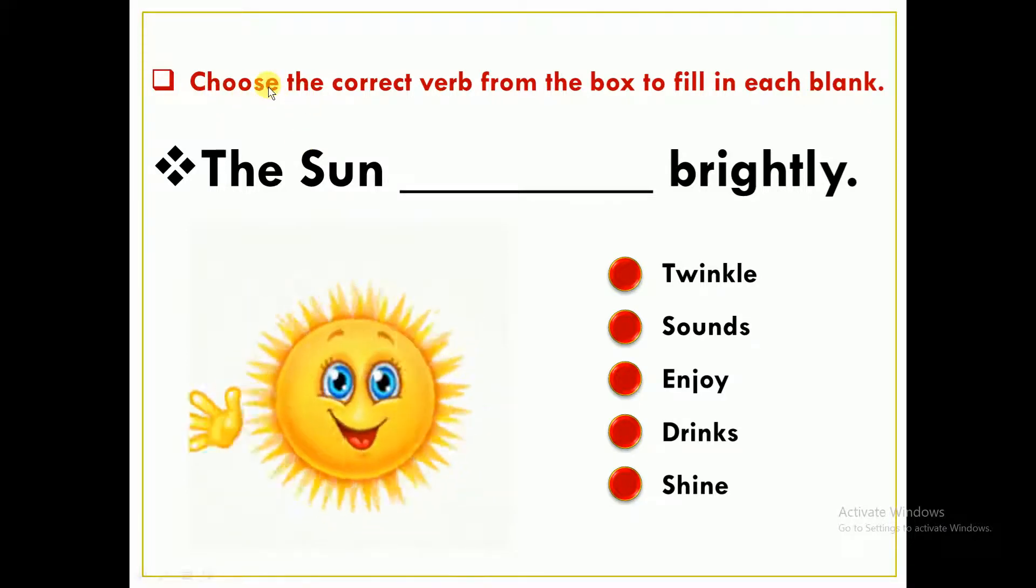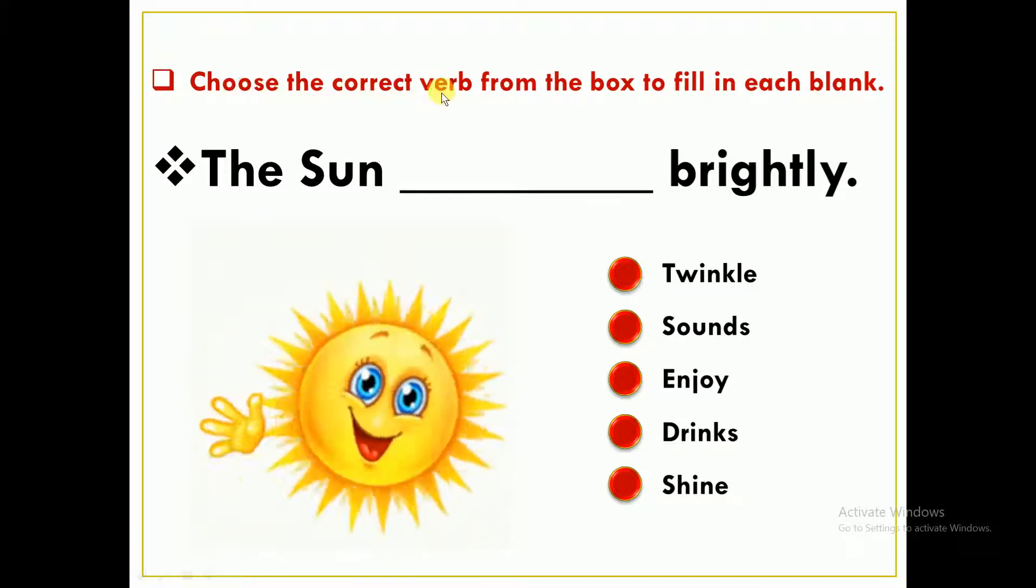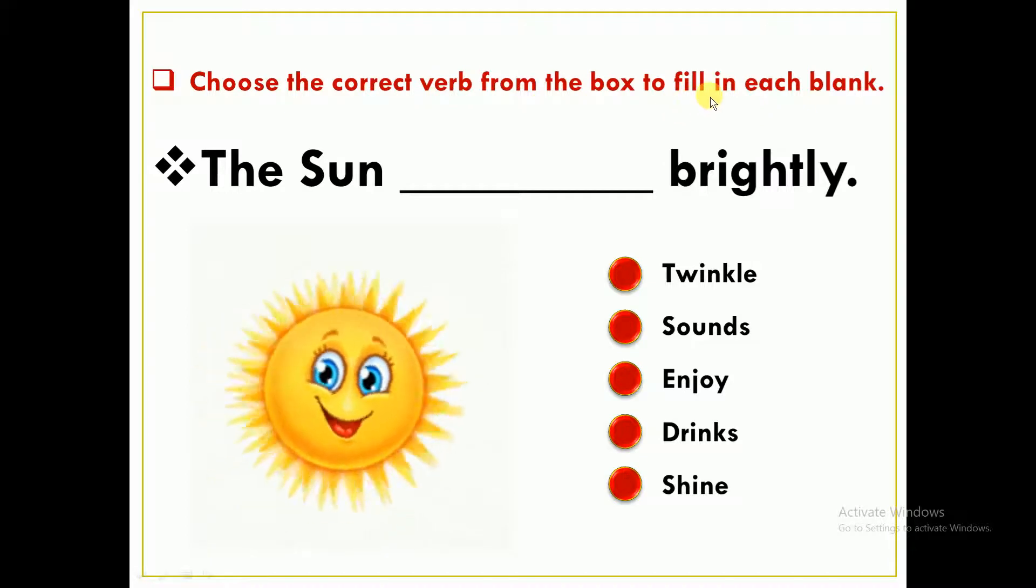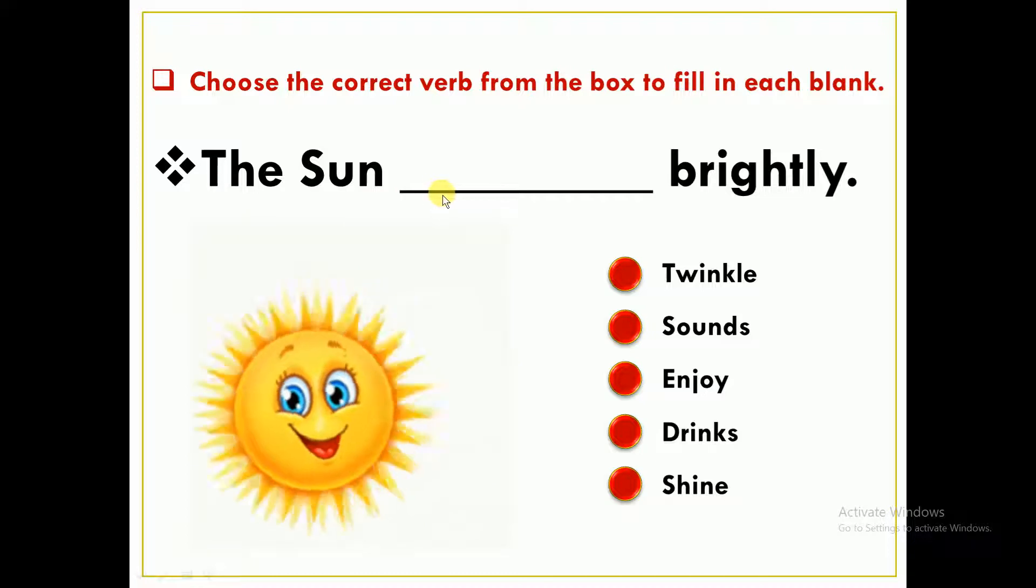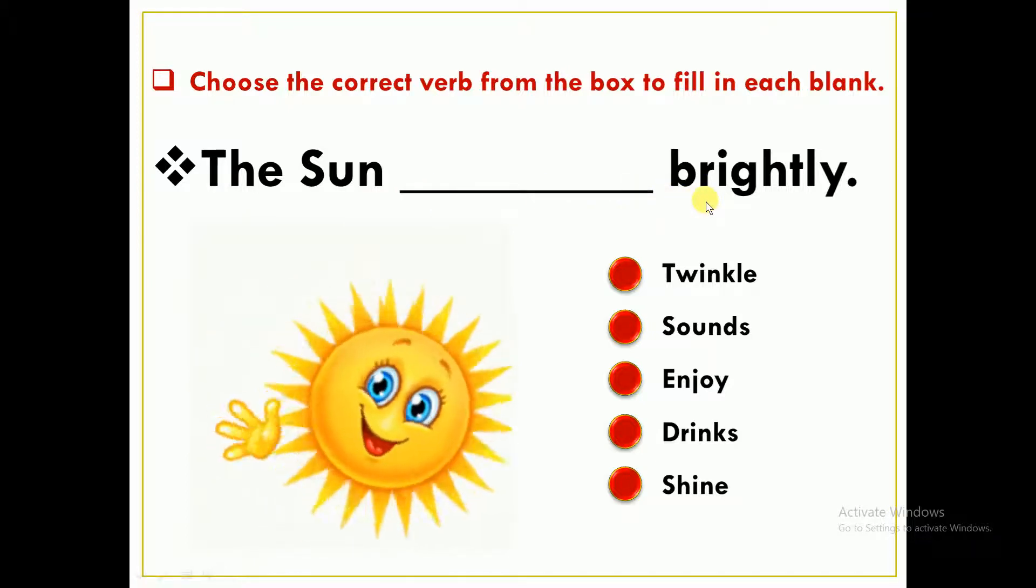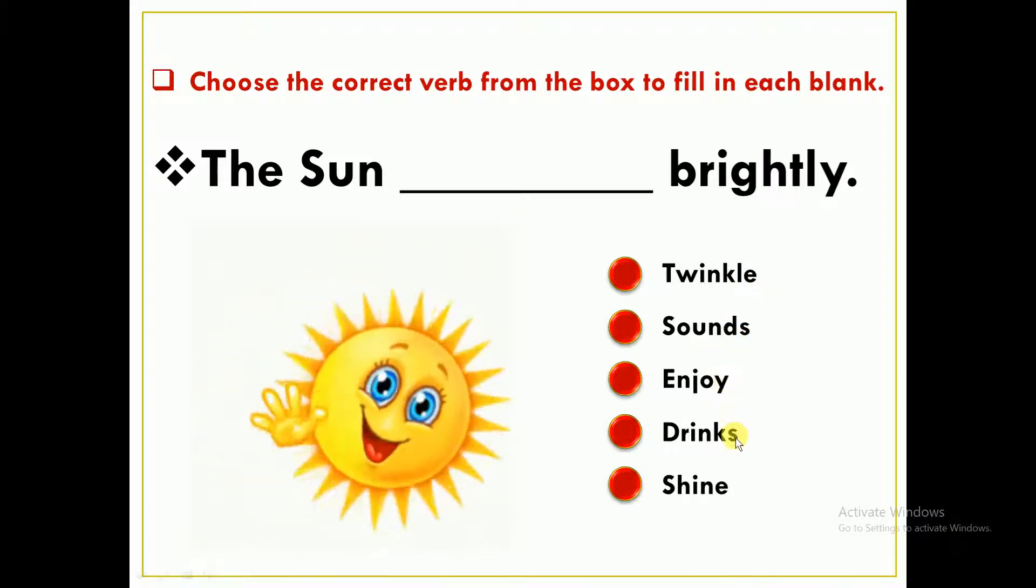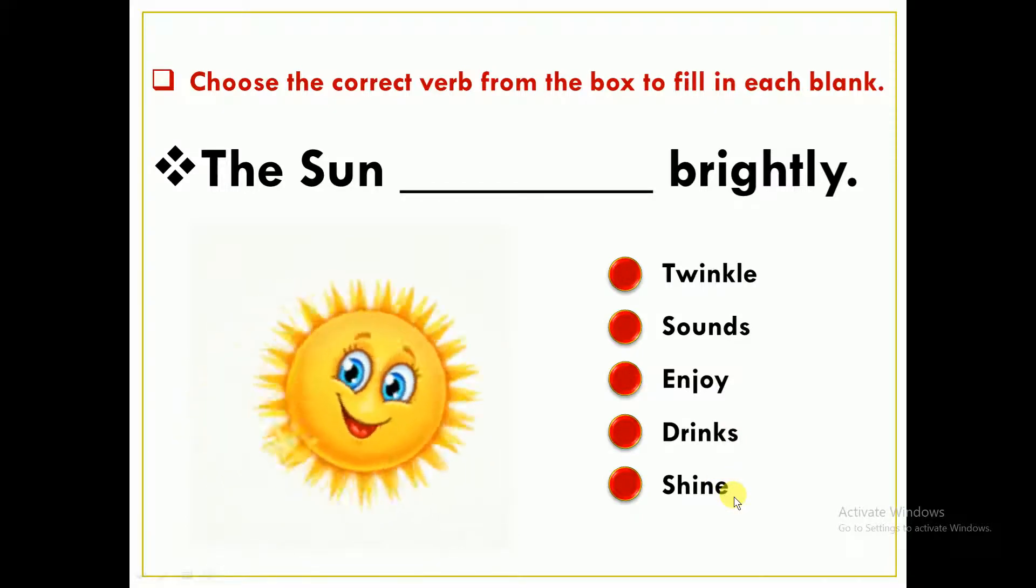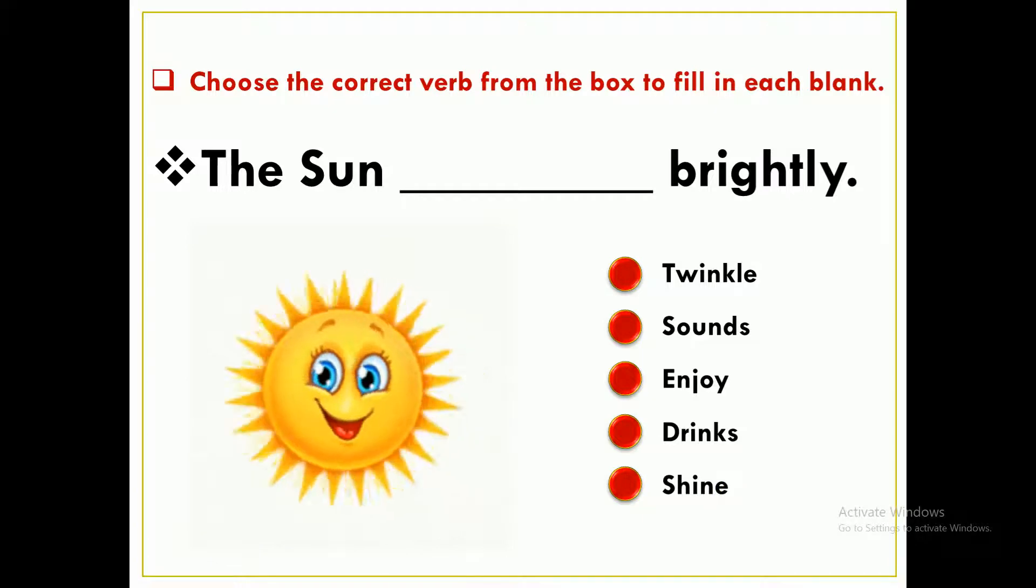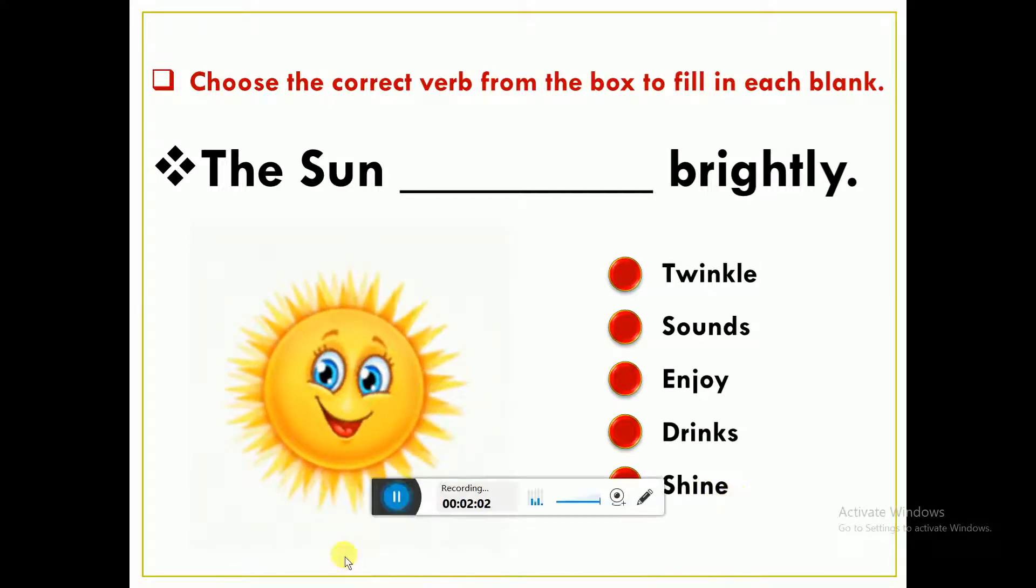Now we have a small exercise. You have to choose the correct word from the box to fill in each blank. So first is: the sun blank brightly. Now kids, you have to see the sun, what is happening? Twinkle, sounds, enjoy, drinks, shine. And answer comment box. What will come in the blank?